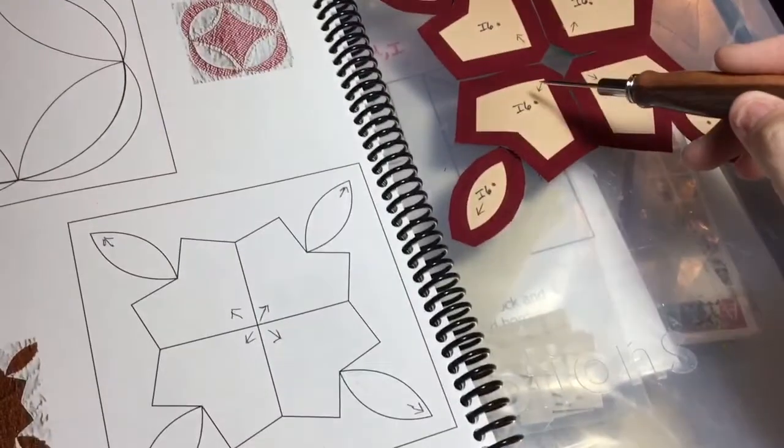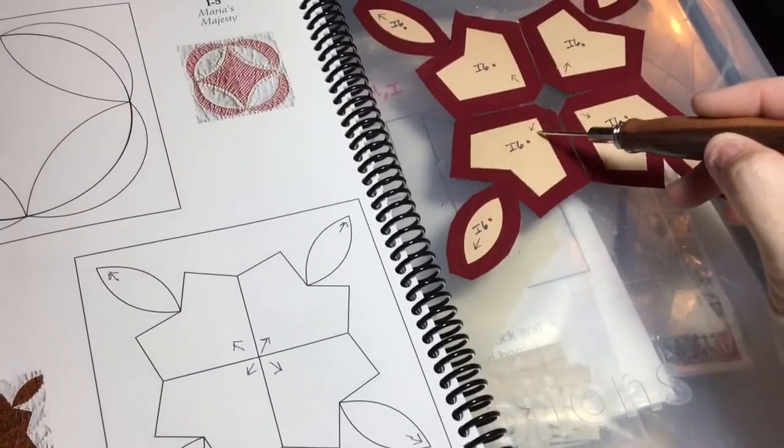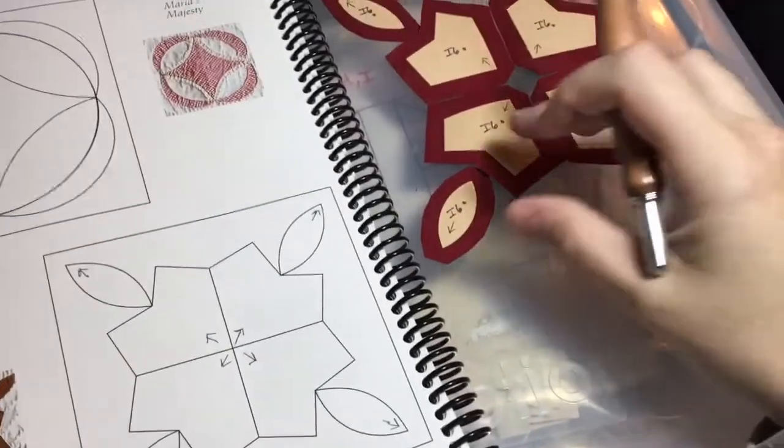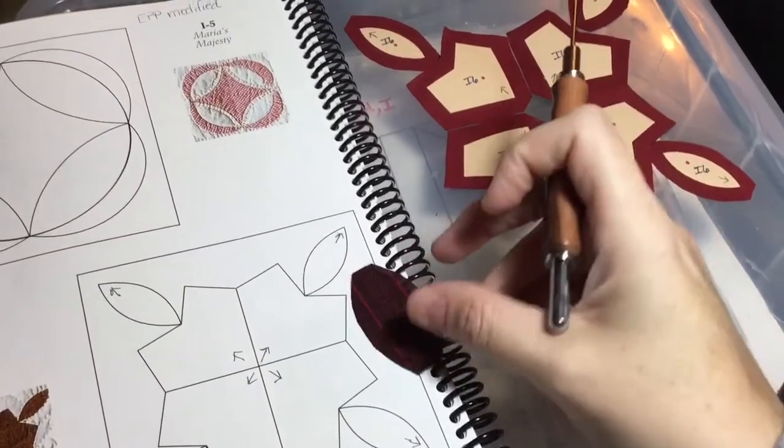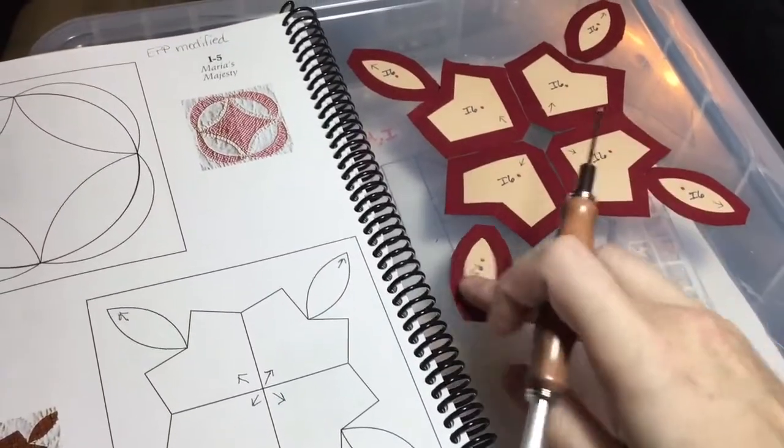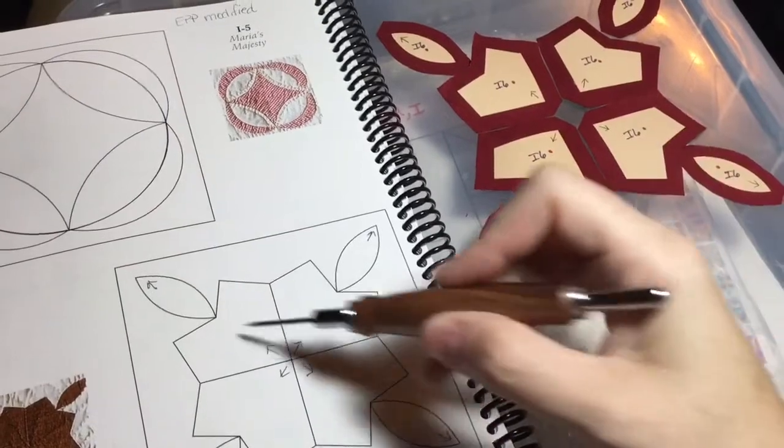My arrows translate into the arrows that I have on my fabric over here, just so that I make sure my directional fabric is going in the right direction because I have a stripe on these, and my stripe is going to be radiating out from the middle.